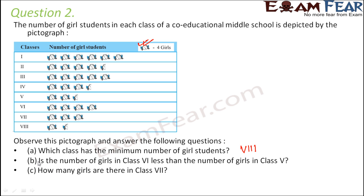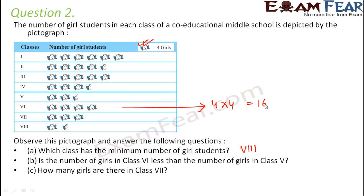Second question: is the number of girls in class 6 less than the number of girls in class 5? So class 6 — how many girls do we have in class 6? 1, 2, 3, 4. Four pictures and each picture represents four girls. So four into four — that is total 16 girls in class 6.